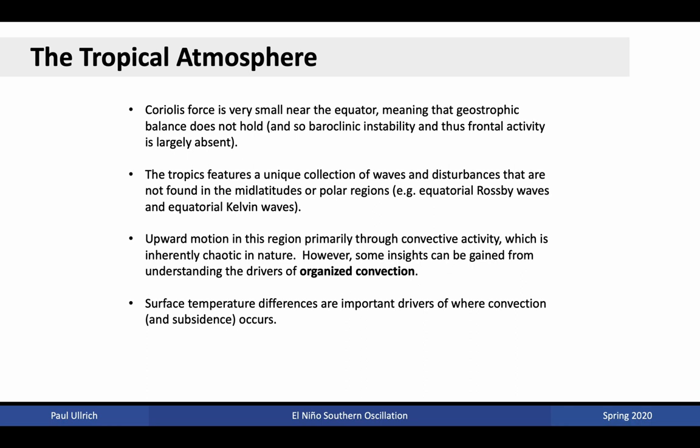For instance, equatorial Rossby waves propagate along the equator, as well as equatorial Kelvin waves. Upward motion in this region is primarily driven through convective activity, which is inherently chaotic in nature. As we discussed for Rayleigh-Bénard convection, essentially small inhomogeneities can trigger convective plumes. Actually predicting the location of that convective event can be quite difficult. However, we can nonetheless gain some insight into the drivers of this inhomogeneity through the study of organized convection. Surface temperature differences play a major role in determining zonal inhomogeneity along the equatorial band. The study of convection is primarily statistical in nature.